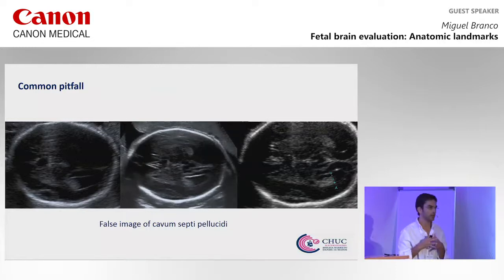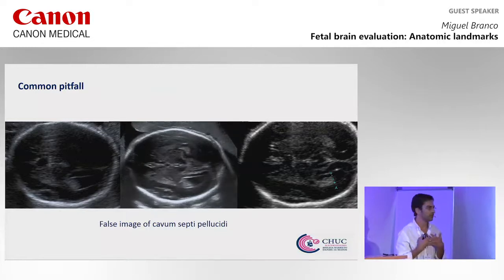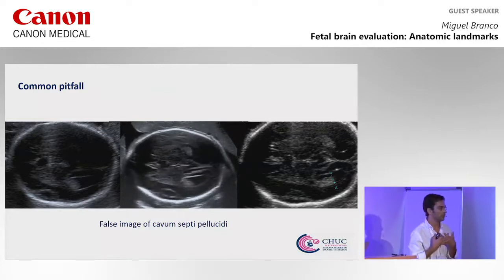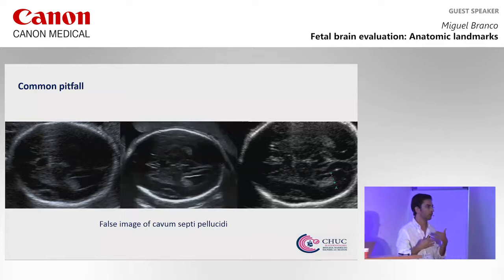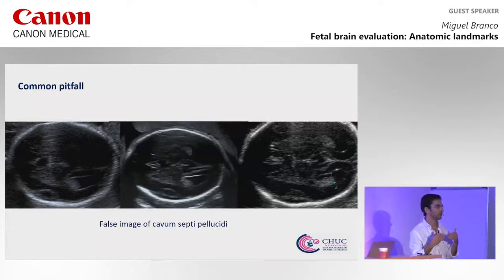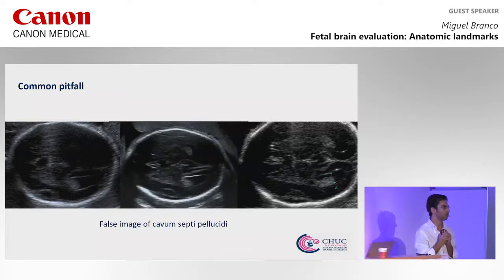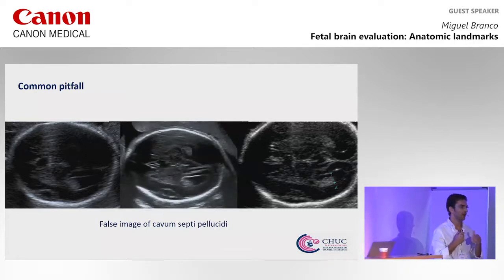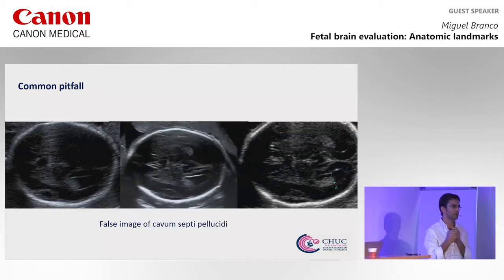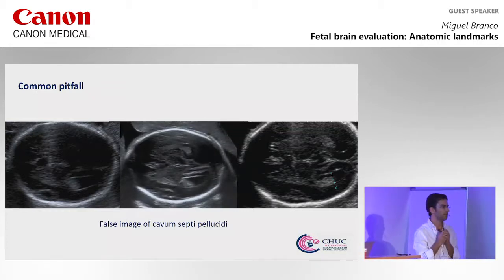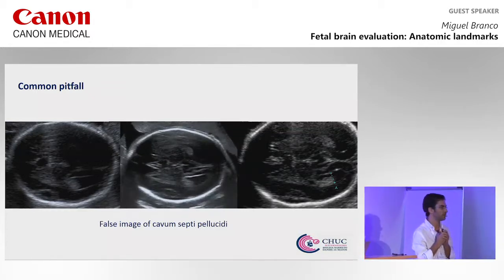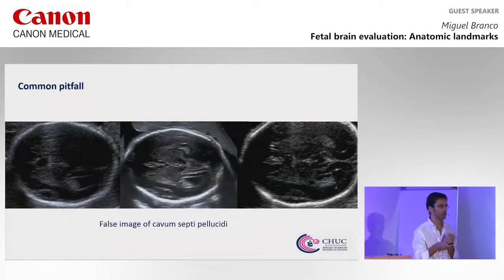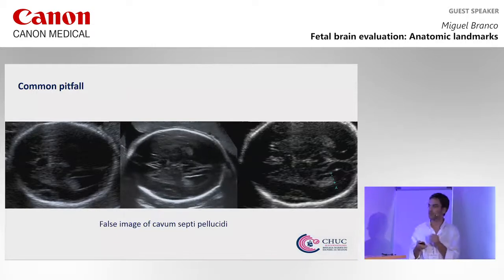There is another common pitfall. Sometimes the roof of the third ventricle in complete agenesis of the corpus callosum is slightly upwardly displaced, and that can mimic the CSP and give us a wrong diagnosis.